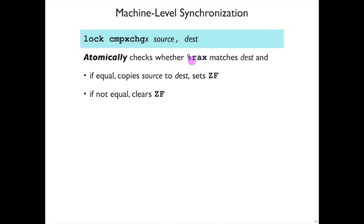There's a value in RAX. The processor is going to look inside of DEST, and if DEST has the same value as RAX, then it's going to move source into DEST. But if DEST has a different value than RAX, then it's not going to move source into DEST.